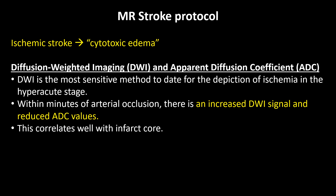Diffusion-weighted imaging, or DWI, provides image contrast that is dependent on the molecular motion of water. DWI is the most sensitive method to date to detect ischemia in the hyperacute stage. It should be remembered that DWI lesions can be at least partially reversible in the very early phase of ischemia, and the size of the DWI abnormality does not necessarily reflect irreversibly damaged tissue. Within minutes of arterial occlusion, there is an increased DWI signal and a reduced ADC value. ADC stands for Apparent Diffusion Coefficient.